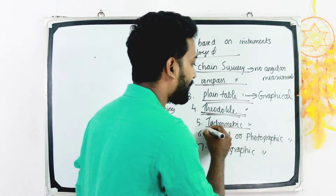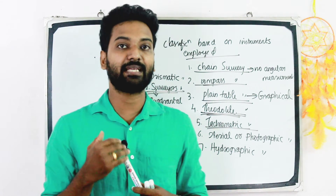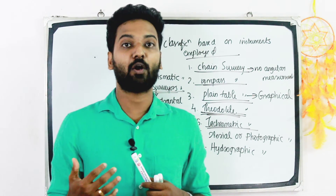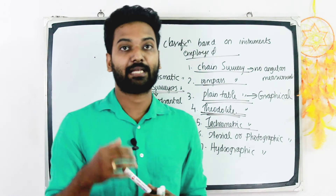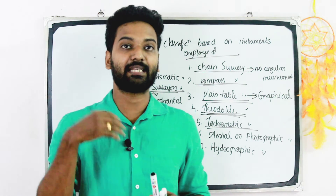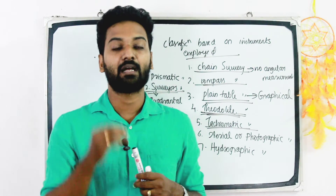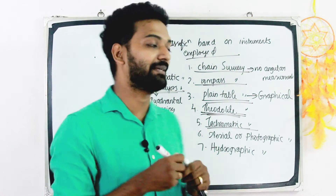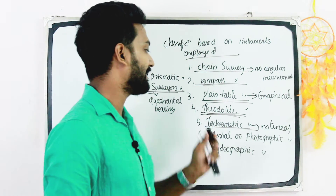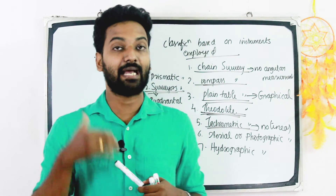The fifth one is tachymetric survey. Tachymetric survey is a branch of surveying in which horizontal and vertical distances are determined by angular observations with a tachymeter. There is no linear measurement, and it is not as accurate as chaining.